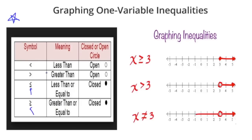Anytime you're graphing an inequality that is less than, you're going to use an open circle — it looks like the letter O. Same thing for when you're graphing a greater than inequality: an open circle. But notice what happens to the circle for less than or equal to — these are called closed circles.